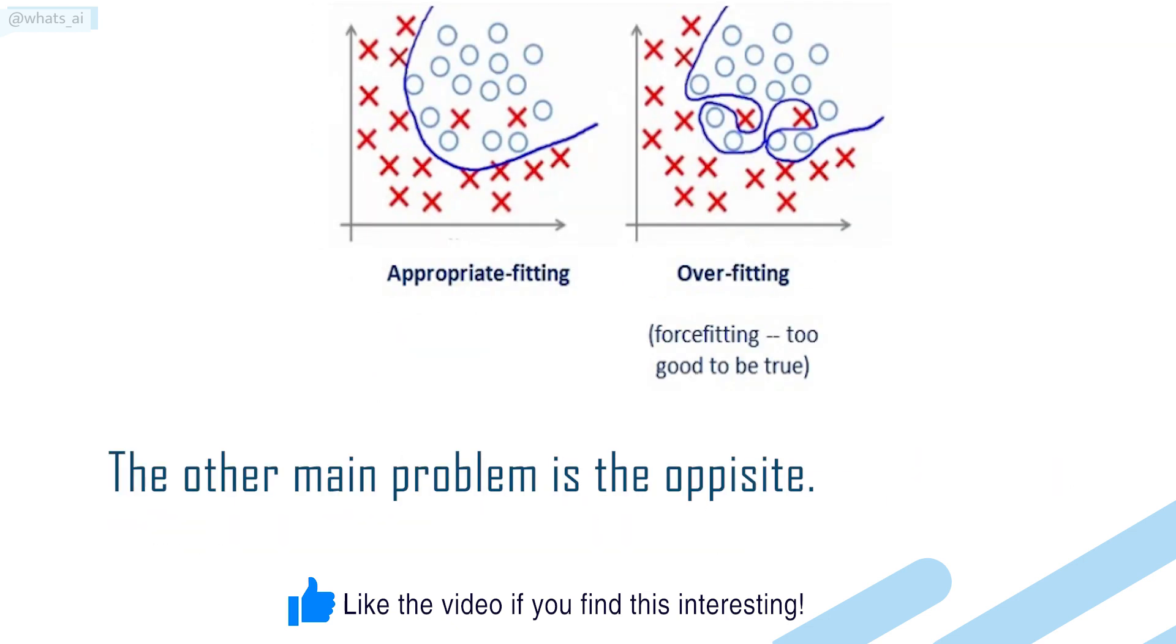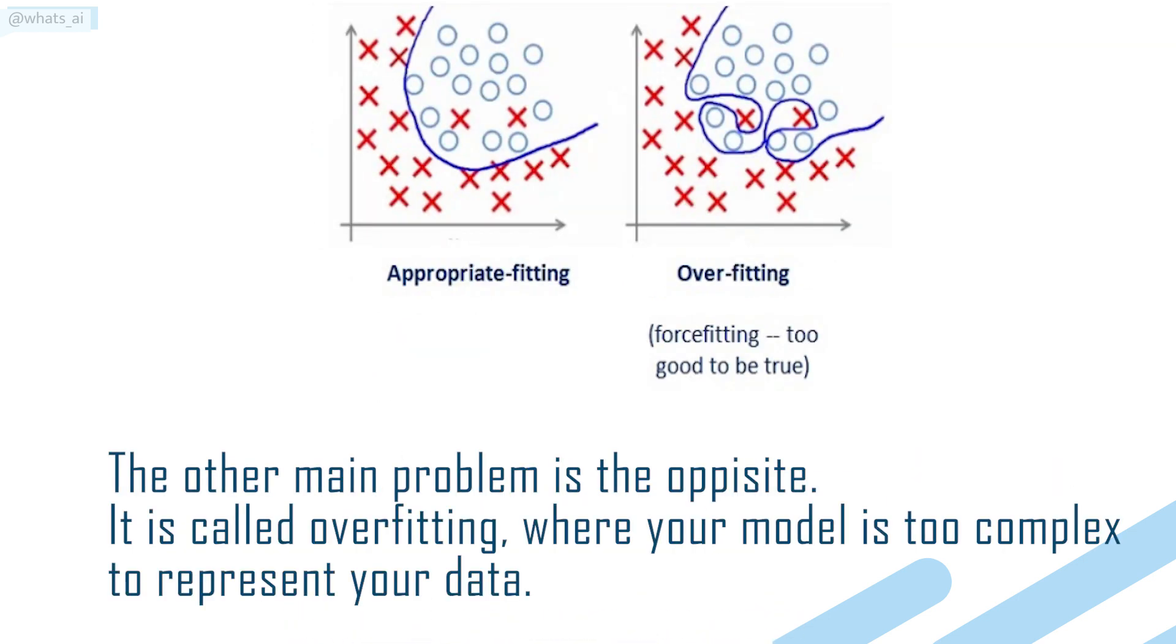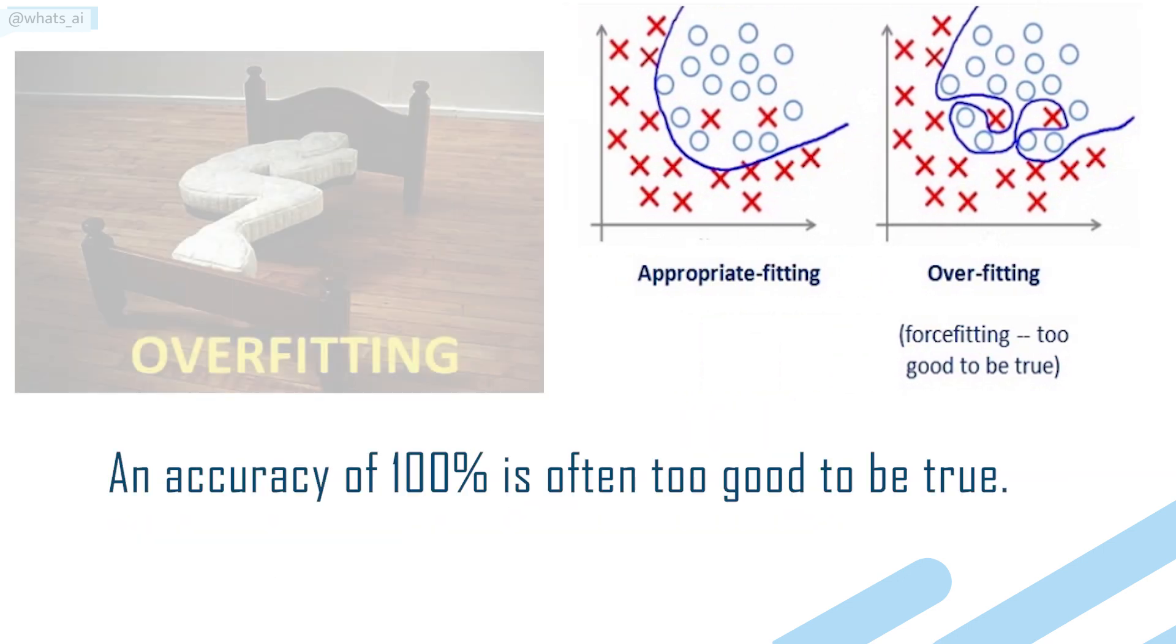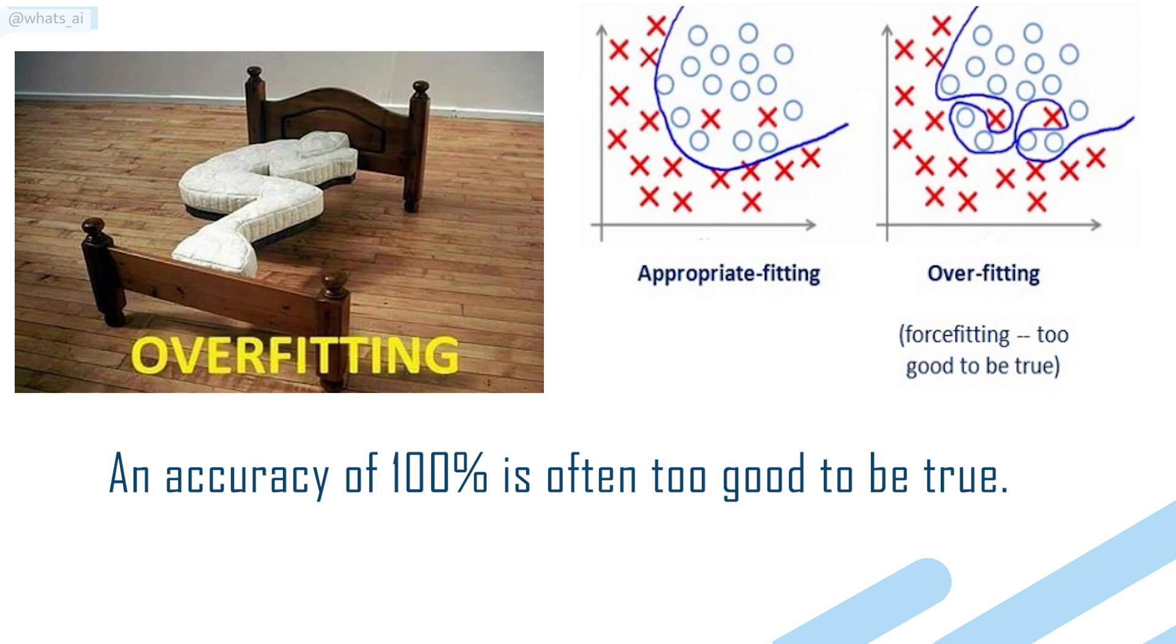The other main problem is the opposite. It is called Overfitting, where your model is too complex to represent your data. If you take the same example, where you want to create a classifier separating dogs and cats, and you keep the training running until all your examples are identified correctly, an accuracy of 100% is often too good to be true.